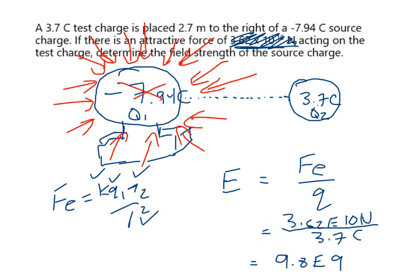What's the unit for field strength? The most common unit is a newton per coulomb. It's not a very nice-looking unit — kind of gross actually. There's also an alternate unit: a volt per meter. Both are valid. I'll use newtons per coulombs for now, and later when I teach you more about voltage, we may use volts per meter as well. There are actually two possible units for electric field strength.